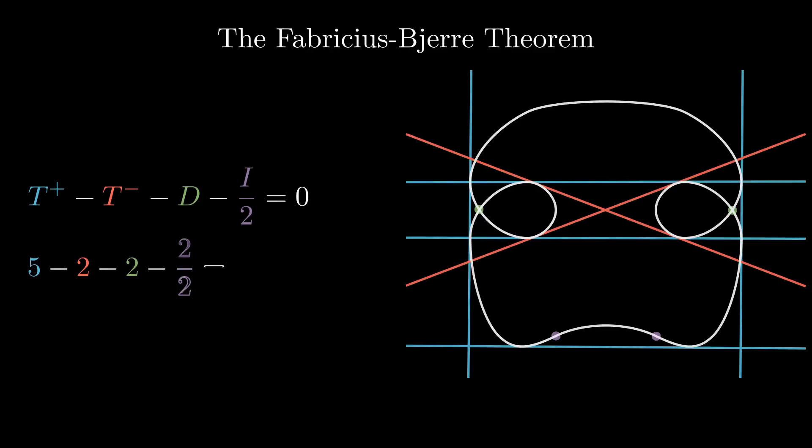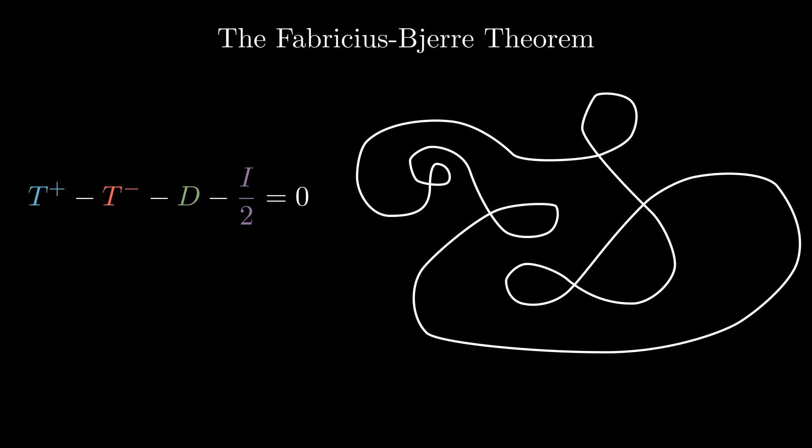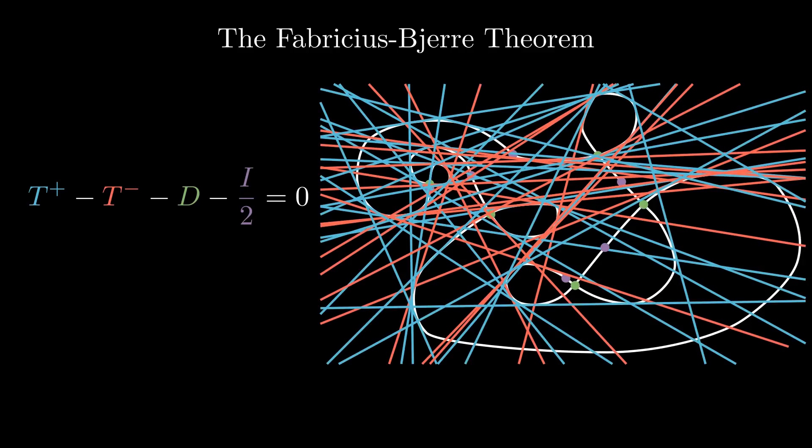And perhaps some of the simpler drawings I've shown here makes you think I've gotten lucky. So take this more complicated scribbly shape here. Now brace yourself, there's about to be a lot of tangents on the screen. Whoa. And even still, if you squint and count carefully, the relationship still holds.